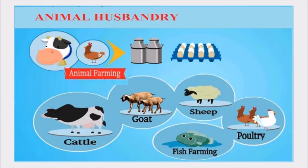Animal husbandry is used on a wide scale to improve both the quality and quantity of animal products, such as milk, meat, and wool. Animals also gain more strength and are developed for hard work. With biotechnology, animal husbandry is improved using two main methods: artificial insemination or embryo transfer, which improve the genetics of those animals.